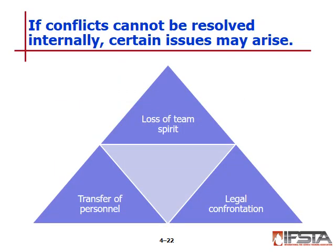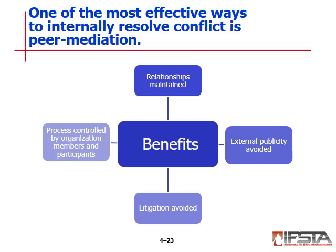If a conflict cannot be resolved internally, certain issues may arise — such as loss of team unity, transfer of personnel, or even legal confrontations. Peer mediation is one of the most effective internal conflict resolution processes. Conflicting parties appear before a team of employees trained in mediation. The benefits include maintained relationships, avoided external publicity, avoided costly litigation, organizational control of the process, and participants ultimately controlling the resolution.